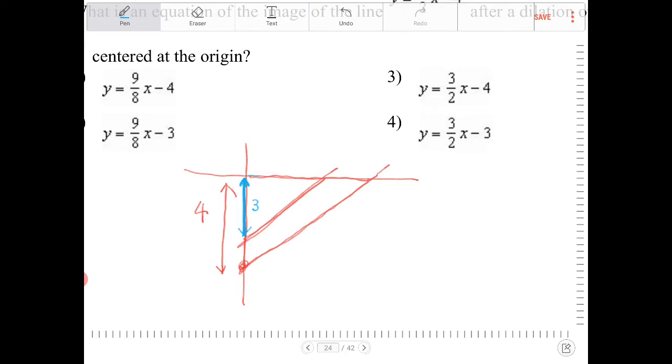So the smaller triangle, the one I'm outlining in blue right now, is going to be similar to the original triangle that was in red. All the various sides are going to be proportional. All the various sides are going to be parallel.